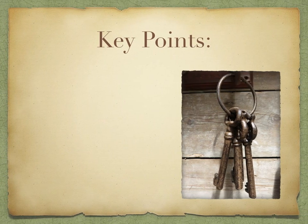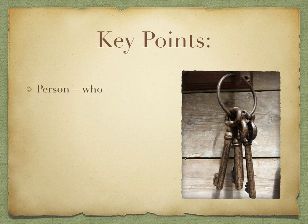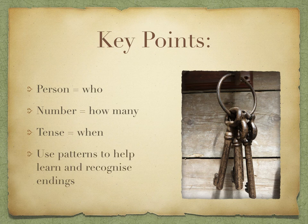So a few key points to remember. Each verb has person, which tells us who's doing the verb, and number, which tells us how many people are doing the verb. Tense tells us when a verb is being done, and there are different endings for each of these. I suggest using patterns to help you learn your endings off by heart, so you can easily recognise them when you're translating.